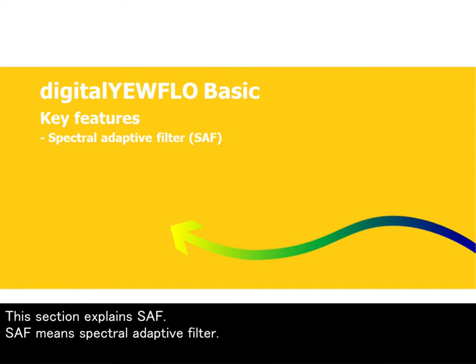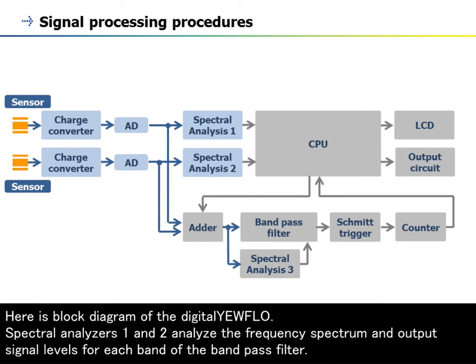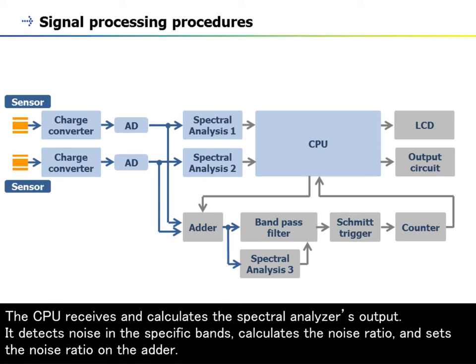This section explains SAF. SAF means spectral adaptive filter. It is a technology for noise detection and calculation of the signal-to-noise ratio. Here is a block diagram of the Digital EarFlow. Spectral analyzers 1 and 2 analyze the frequency spectrum and output signal levels for each band at the bandpass filter. The CPU receives and calculates the spectral analyzer's output. It detects noise in specific bands, calculates the noise ratio, and sets the noise ratio on the adder.